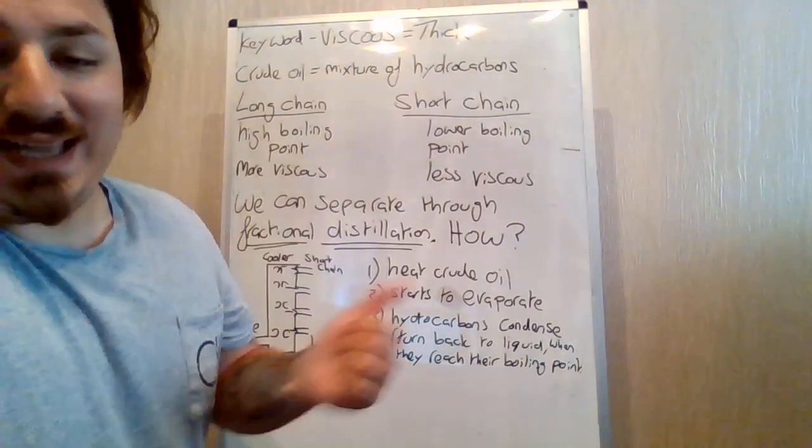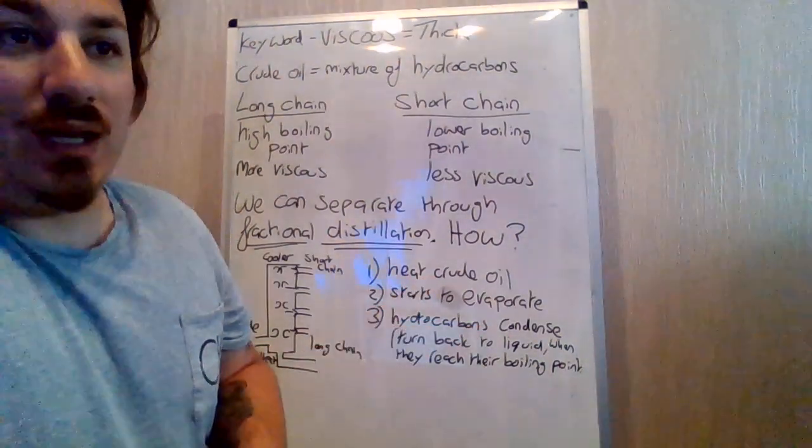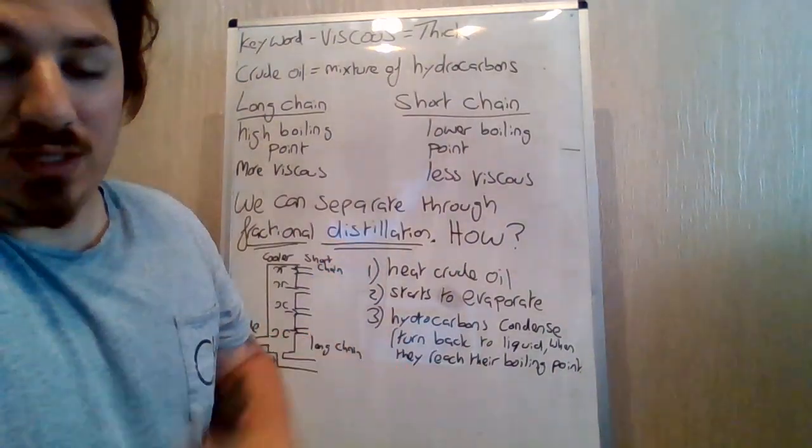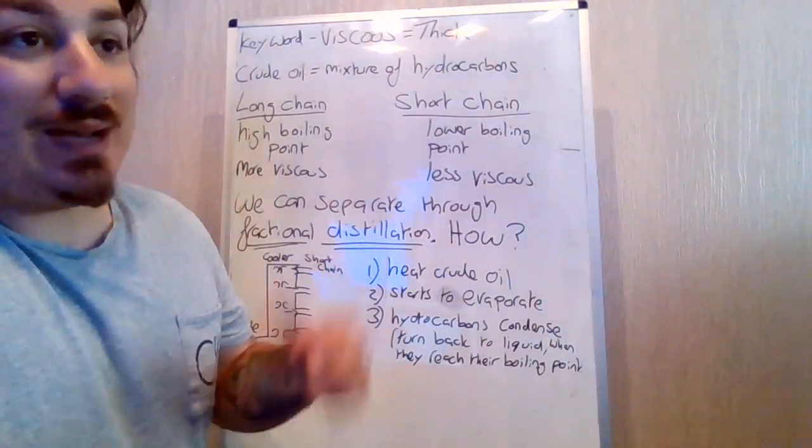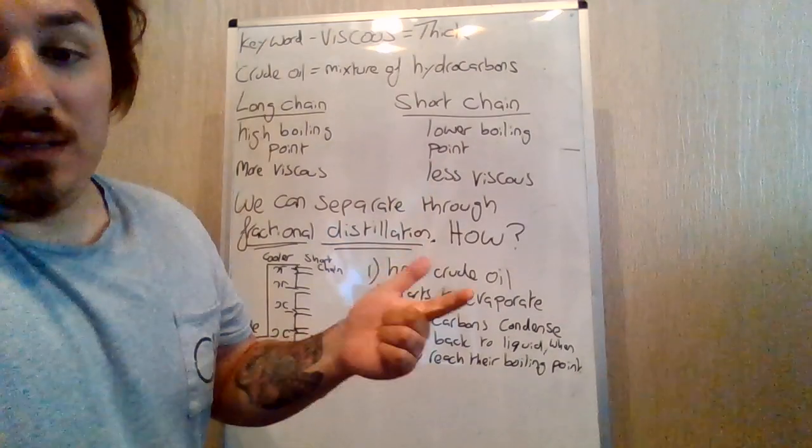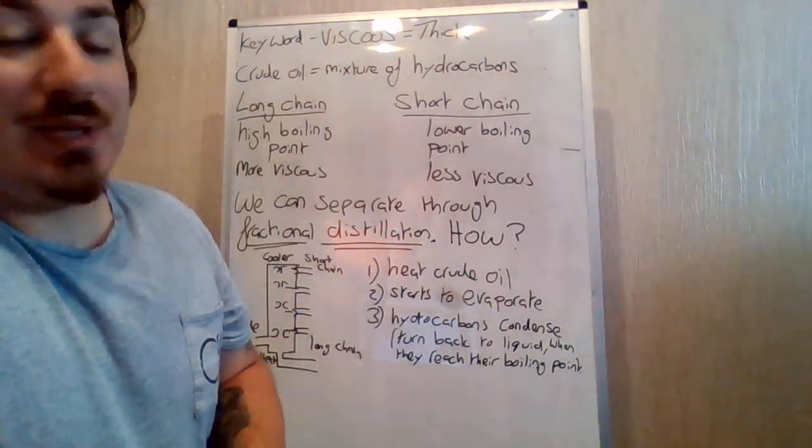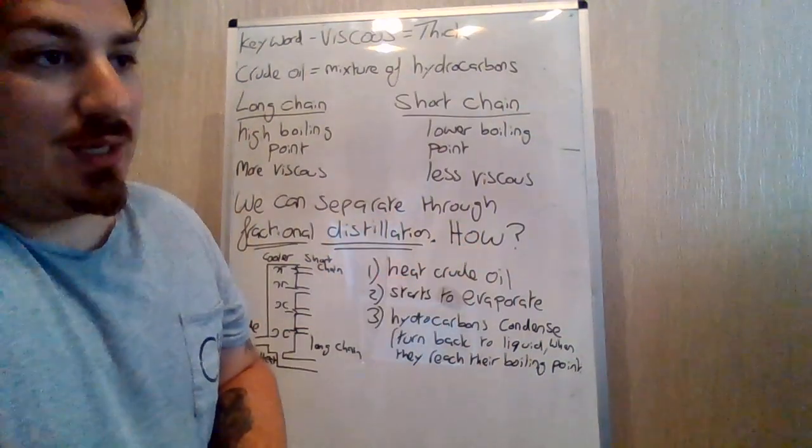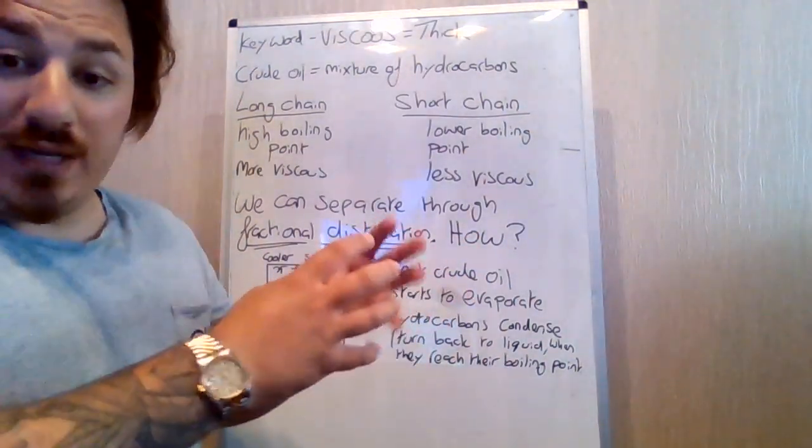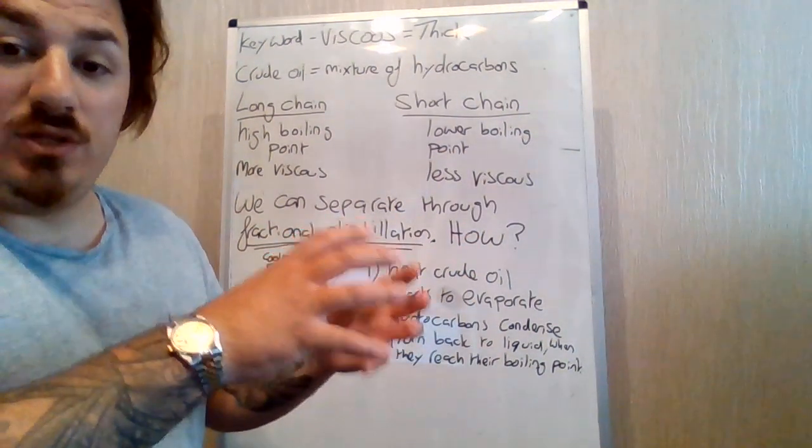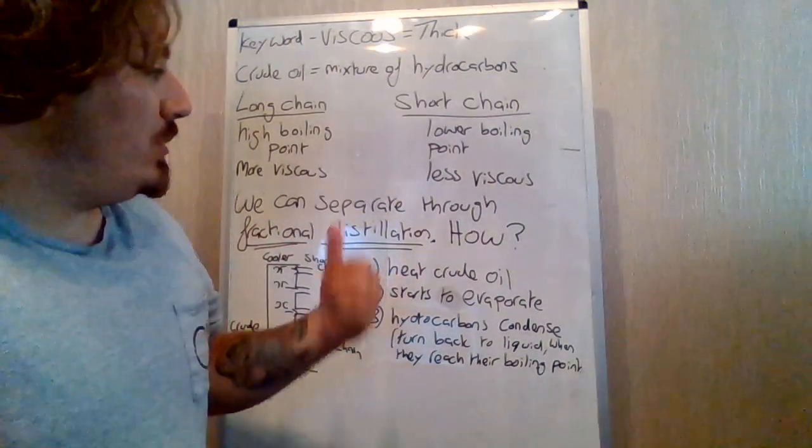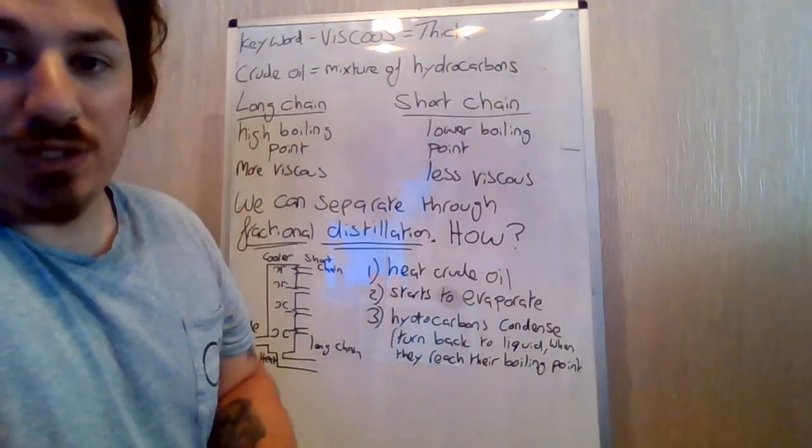So last time we did hydrocarbons, we did the alkanes and alkenes, which is a mixture of hydrocarbons, which is hydrogen and carbon only, no other element. We did alkanes, monkeys eat peanut butter, and we did alkenes, every person buys pyjamas. But you've got to remember they're a mixture, they're a mixture of hydrocarbons, so we've got to be able to separate them, and this is what we're talking about today, and we're going to go on to fractional distillation.